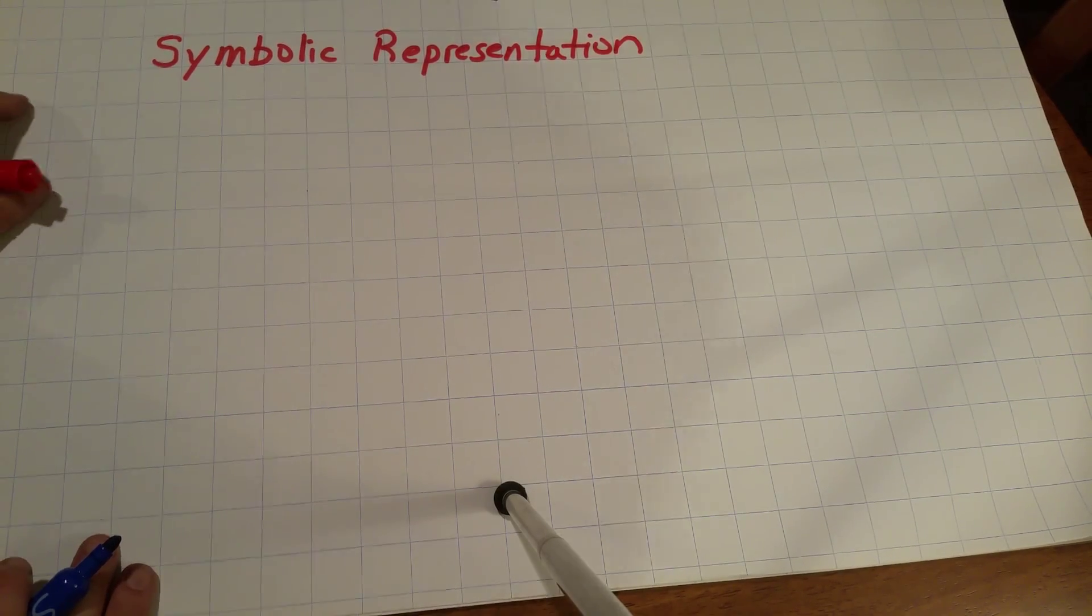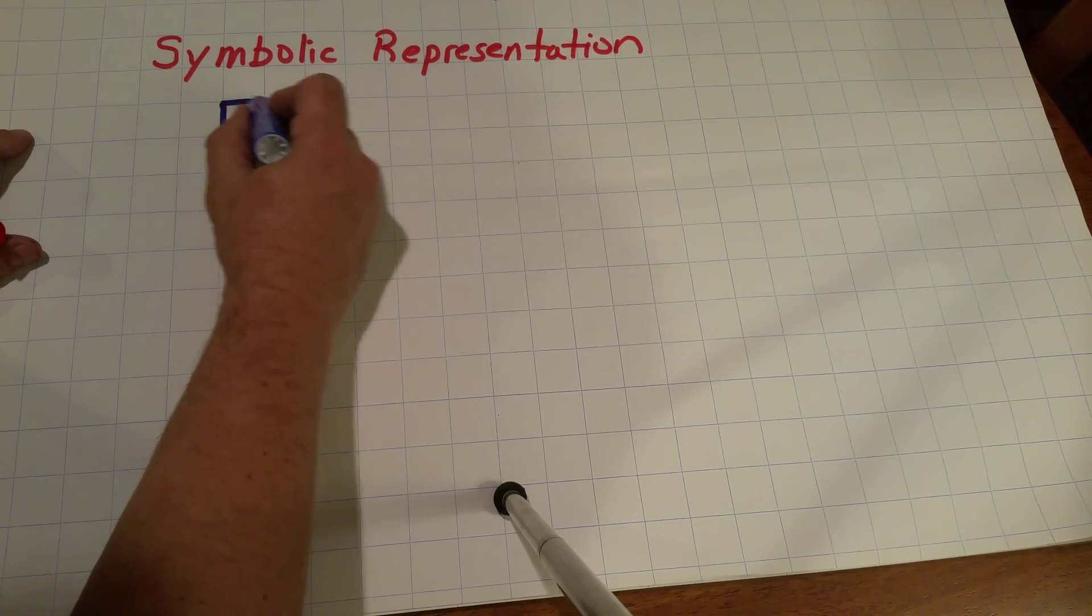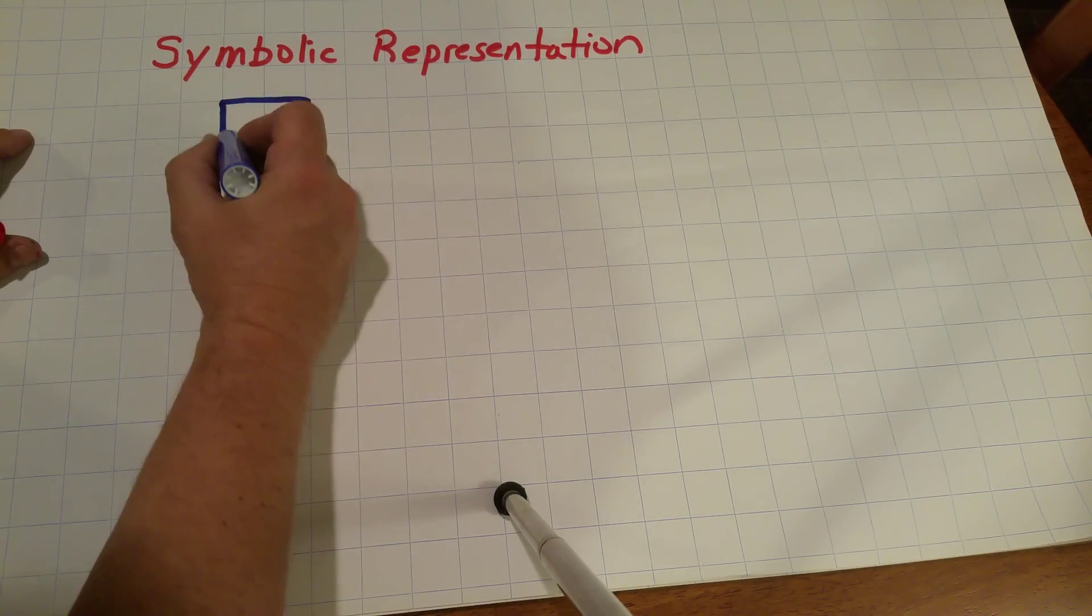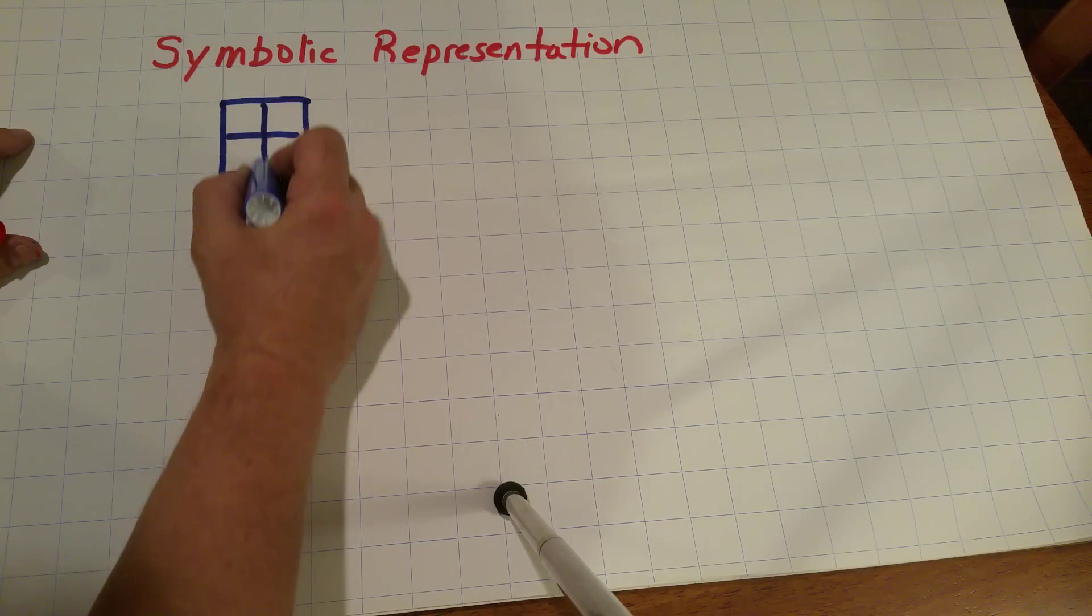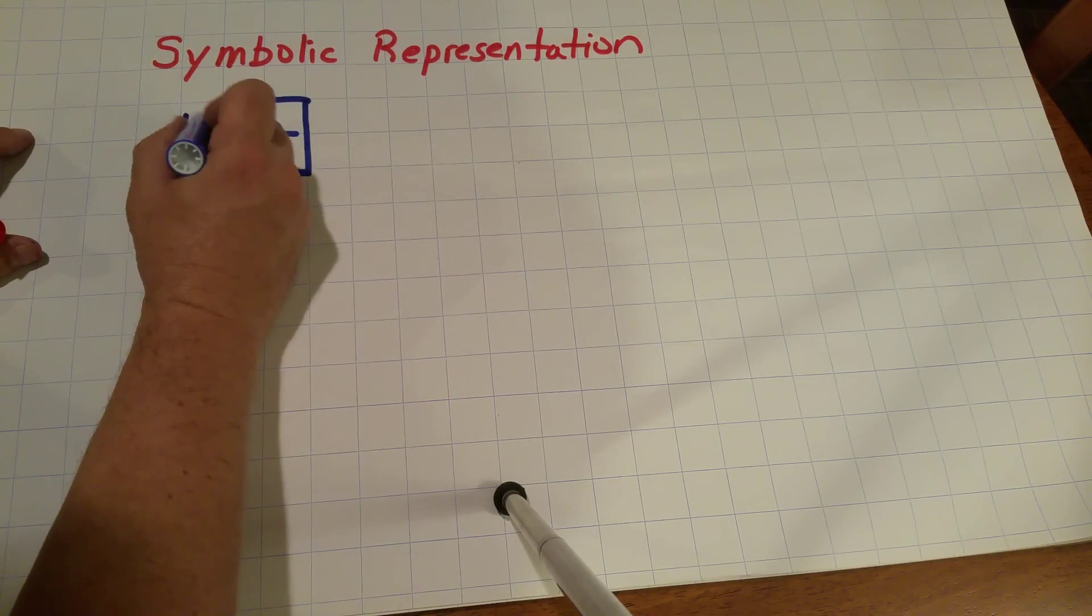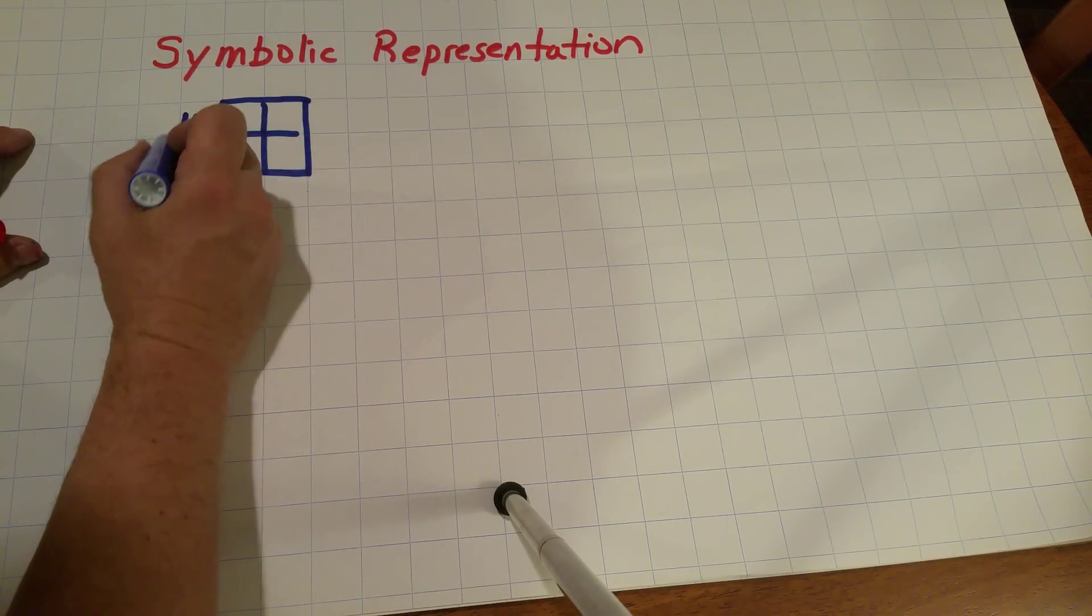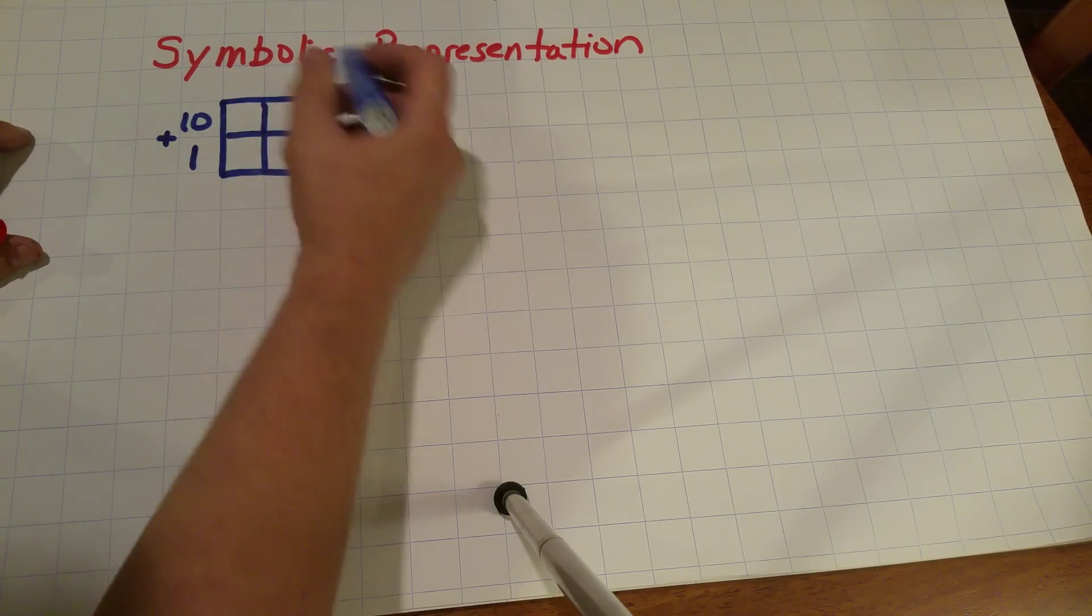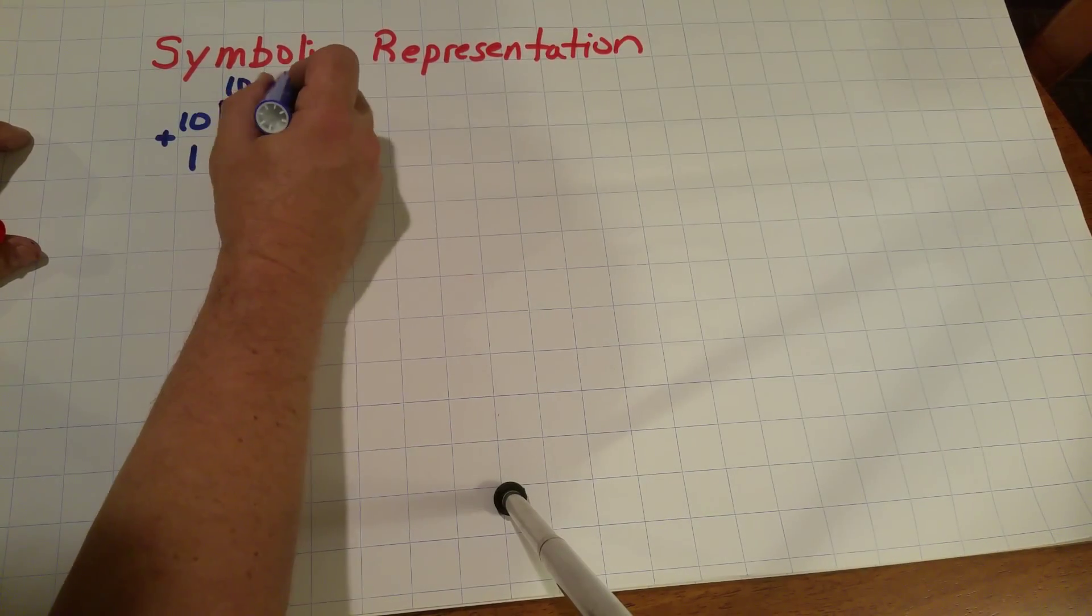I'm going to now draw a square that looks something like this, and here I will put a 10 plus 1, and here I will put a 10 plus 2.